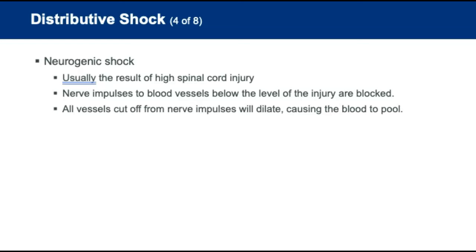Neurogenic shock is usually the result of a spinal cord injury. The muscles in the walls of the blood vessels are cut off from nerve impulses that cause them to contract. All vessels below the level of the spinal cord injury dilate widely, increasing the size and capacity of the vascular system, causing blood to pool.